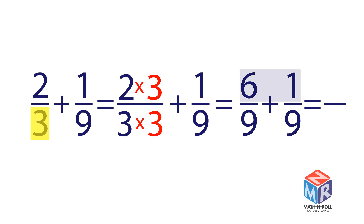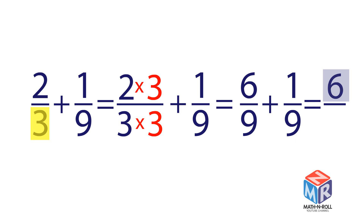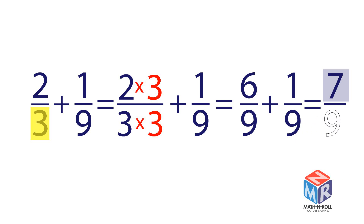Now add the fractions. Add the numerators and keep the denominator the same. So 2 thirds plus 1 ninth is equal to 7 ninths.